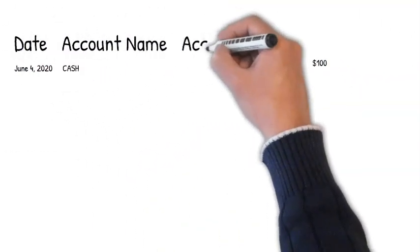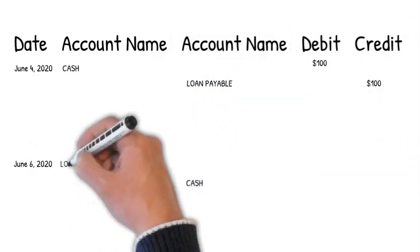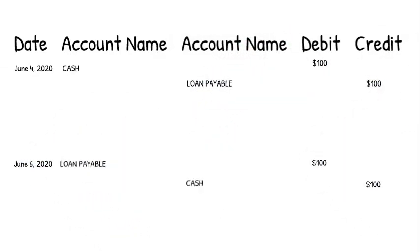Journal entries are another method of picturing business transactions. Each journal entry has the date and the account that you're debiting. Using the same example, cash would be debited at $100 and the loan payable would be credited $100. Then when the loan gets repaid by the company, loan payable is decreased, so it would be debited $100, and cash is decreased because the company is paying back that $100, so it would be credited $100.